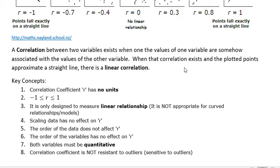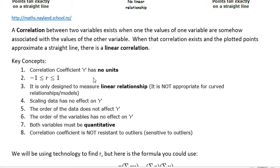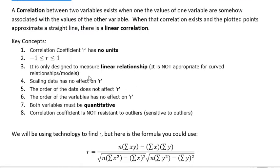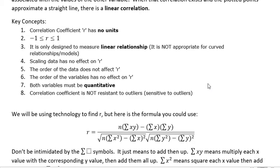Key concepts: correlation coefficient R has no units, falls between negative one and one, is only designed to measure linear relationships, not curved relationships. The scaling of the data does not affect R, the order of the data does not affect R, and the order of the variables has no effect on R. Both variables must be quantitative, and the correlation coefficient is not resistant to outliers, meaning it's sensitive to them.